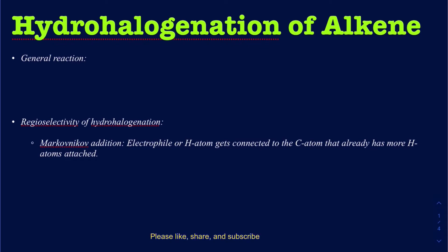If I take a generic example, suppose I have ethene. The structure of ethene would look like this. I'm going to write down the hydrogens for the sake of seeing what's happening to the incoming species.